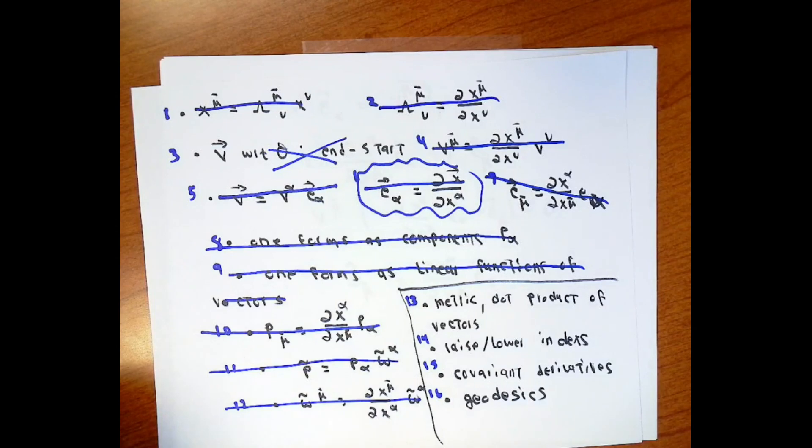The only thing that's left is to do something about the metric, the dot product of vectors, talk about raising and lowering indexes, how to do covariant derivatives. And from the covariant derivatives, get our hands on the geodesics. And every single thing that we've talked about in the old setting is either still true in the new setting or not important to us.